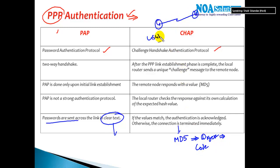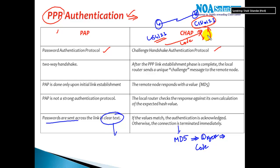For example, if we configure the password as cisco123 on both sides, CHAP will not send the password directly. Instead it generates an MD5 digest code by running the algorithm, then sends it to the remote device. The remote device runs the same algorithm and if the codes match, authentication is successful and the link comes up. If not, the interface status goes up/down — physical link is up but protocol status is down.